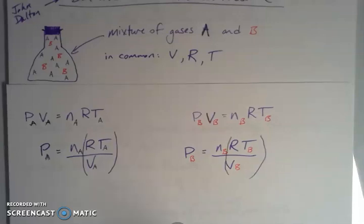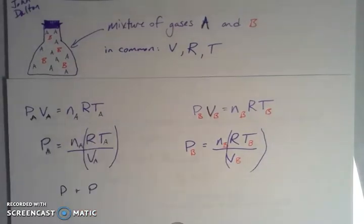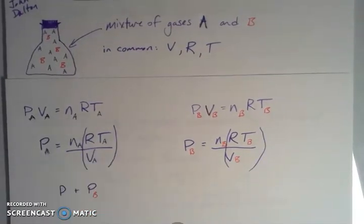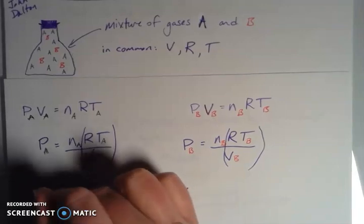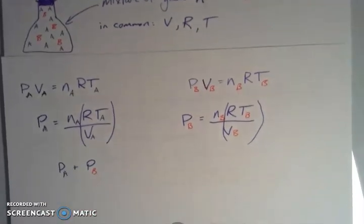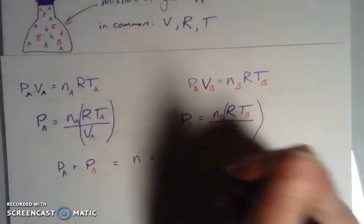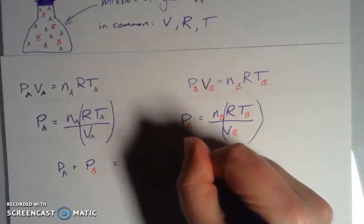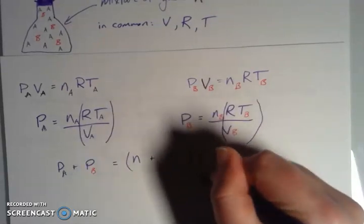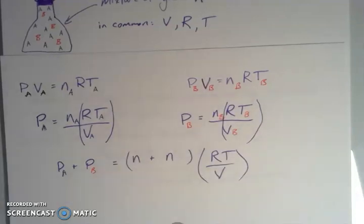So my P A plus my P B, then I'm going to get the P total. And so again, if I kind of combine these guys together, then I get my number of moles plus my number of moles. And then I'm going to take out this RT over V, which is constant for both.